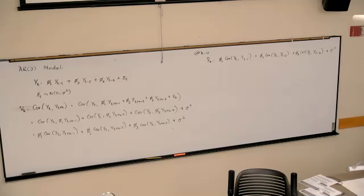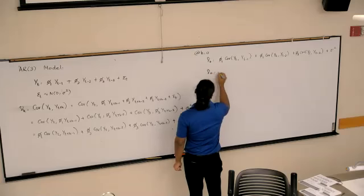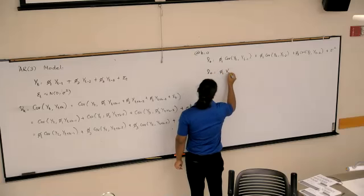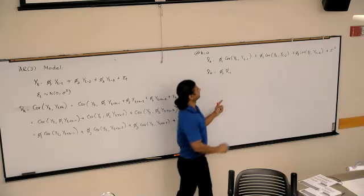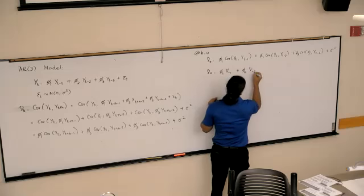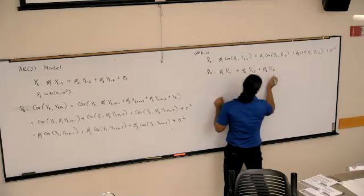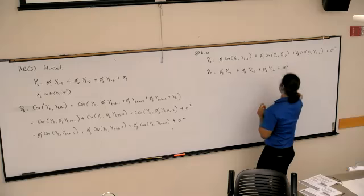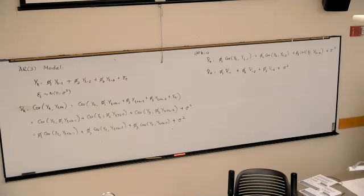It's sigma squared, covariance of epsilon T. This would be gamma nought equals phi 1 gamma minus 1 plus phi 2 gamma minus 2, plus phi 3 gamma minus 3 plus sigma squared.